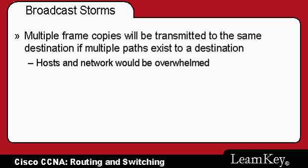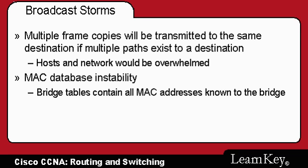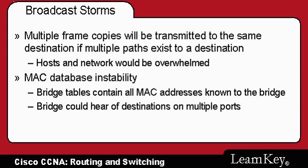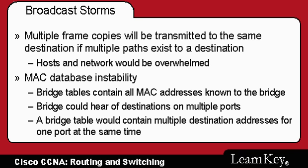There's another problem that can occur known as MAC database instability. The bridge keeps a database or table of all the MAC addresses it knows about. Without loop avoidance, we could get into situations where the bridge is hearing about destinations on more than one port. As a result, you would see the destination port for a particular MAC address change depending upon which port the bridge learned that MAC address from — and without loop avoidance, the bridge might be learning the MAC address from more than one port at the same time.